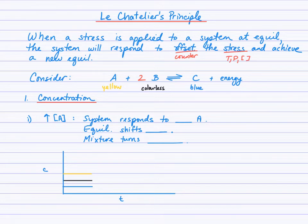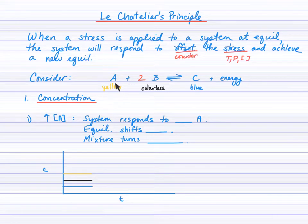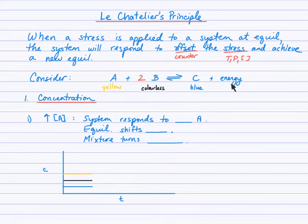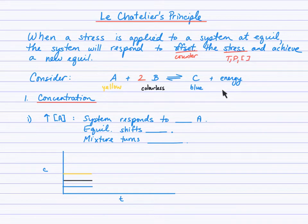The system will offset or counter the stress — essentially do the opposite. We'll consider the reaction A plus 2B in equilibrium with C. The energy term is on the right side of the arrow, so the forward direction is exothermic and the reverse direction is endothermic. We'll consider that when temperature is the stress.